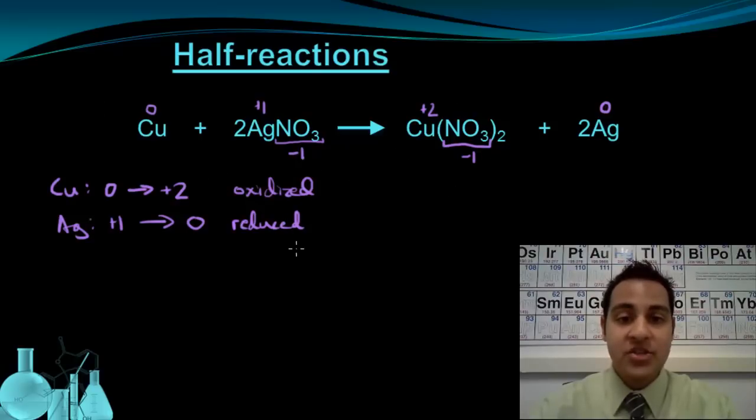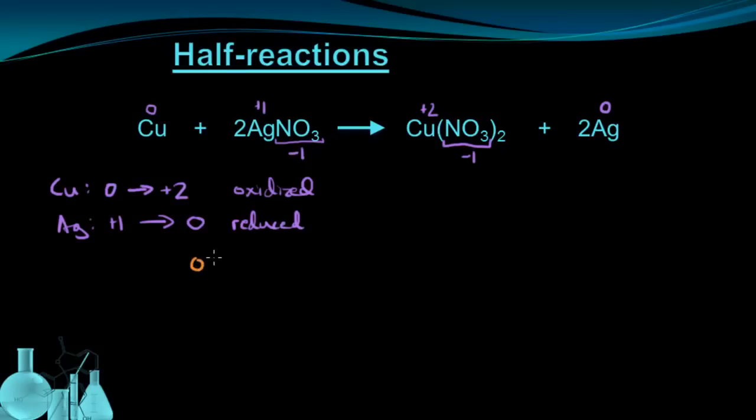We can now break this whole reaction into half reactions—specifically, half for oxidation and half for reduction. For the oxidation half of the reaction, copper starts at an oxidation state of zero and becomes copper 2 plus. For reduction, silver starts at plus 1 and becomes Ag zero, pure silver. But there's something missing from these reactions. We have to somehow account for the fact that copper went from zero to plus 2 and silver went from plus 1 to zero. We already know that that change is caused by a transfer of electrons. We just need to represent those electrons somehow.